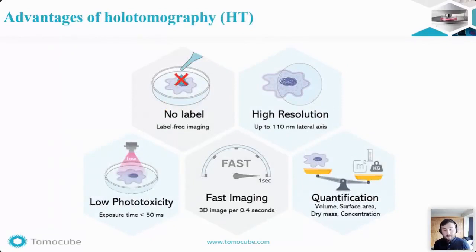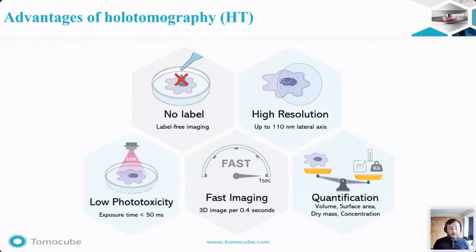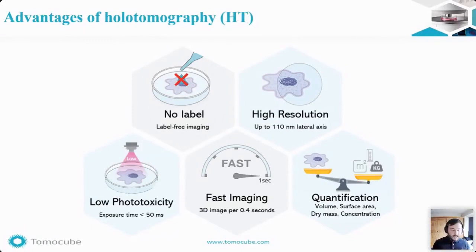These are some of the advantages of holotomography. First, you don't need to label the samples at all, because holotomography detects the illumination of light. Also, it has a fast acquisition process with a speed of up to 2.5 frames per second for 3D and 150 frames per second for 2D images. There is a resolution of up to 110 nanometers on the lateral axis, and all of this is achieved with low phototoxicity.